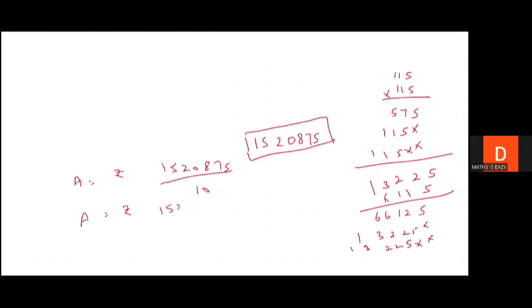152,087.50 we can write. So compound interest would be equal to amount minus principal. So compound interest would be equal to rupees 152,087.50 minus 1 lakh. So compound interest equals rupees 52,087.50.